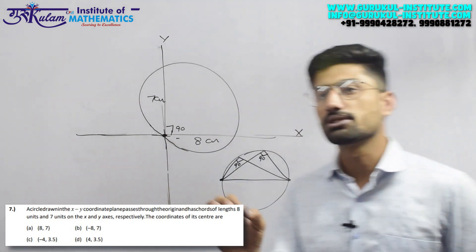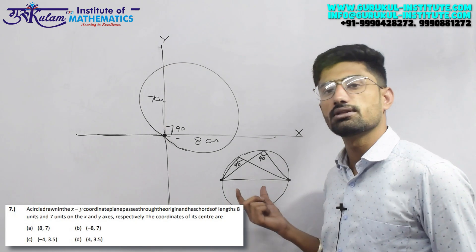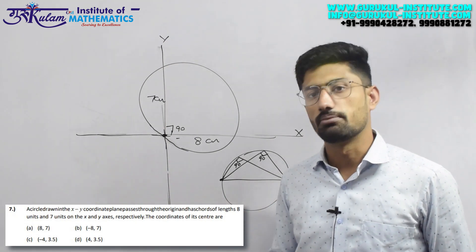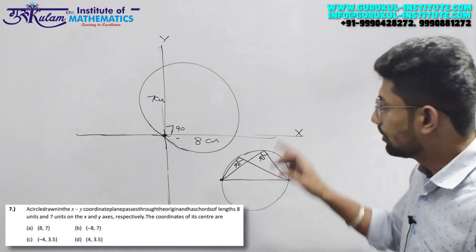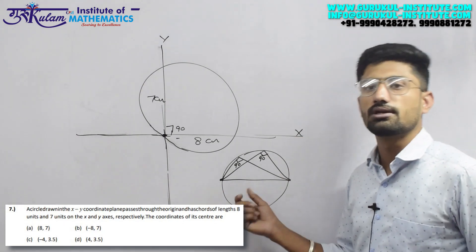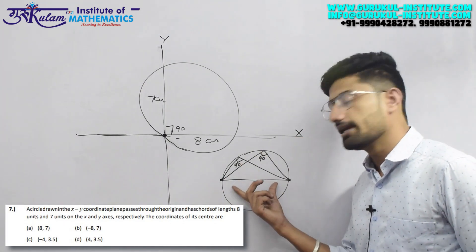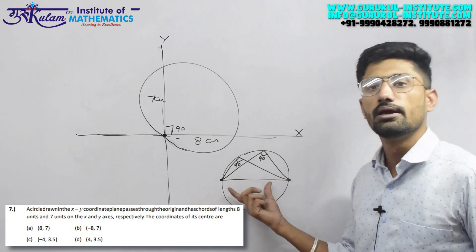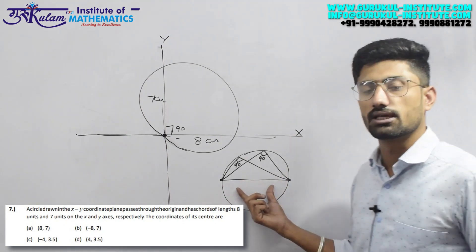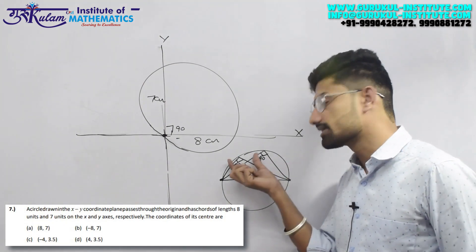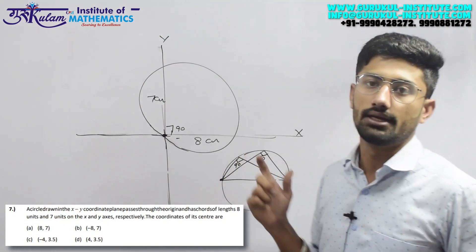So in circle questions, 90 percent of questions use this theorem. This is the most important theorem - if a 90 degree angle is forming, it implies that this is the maximum chord, or in other words, the diagonal of the circle.